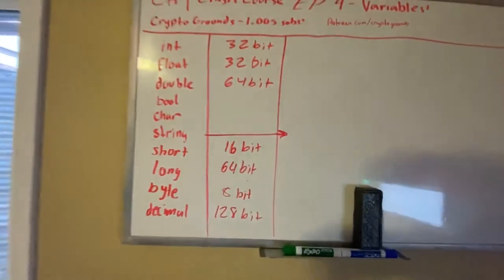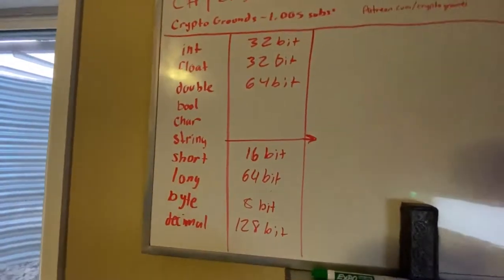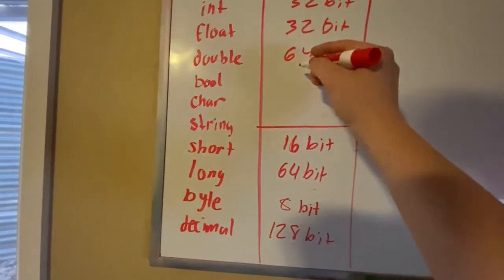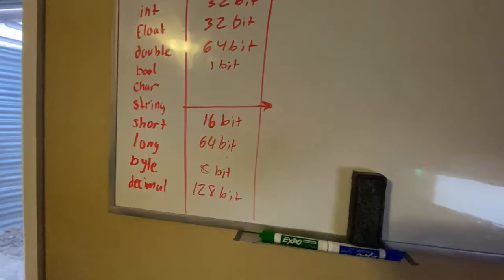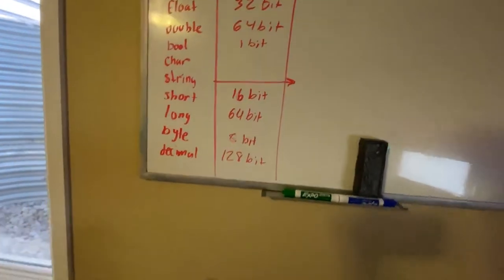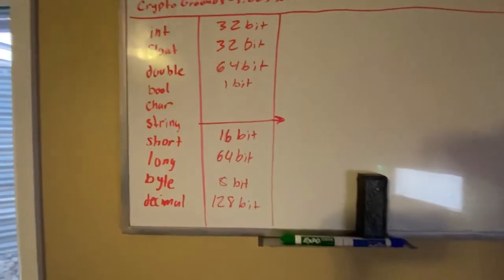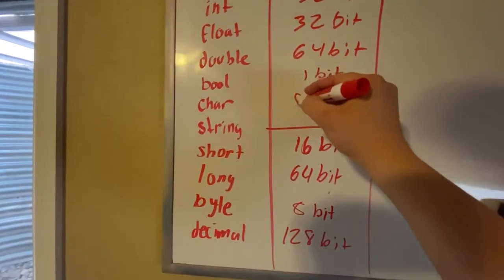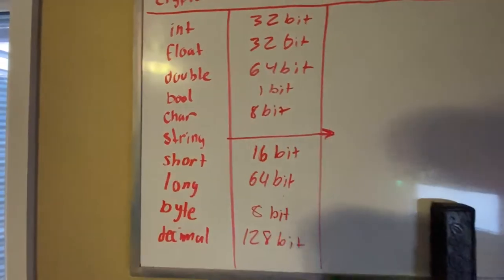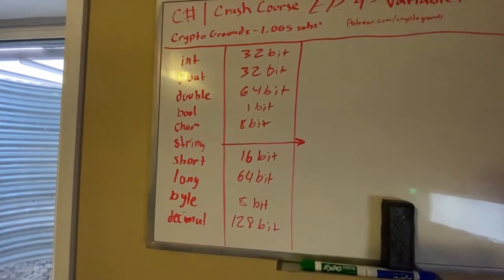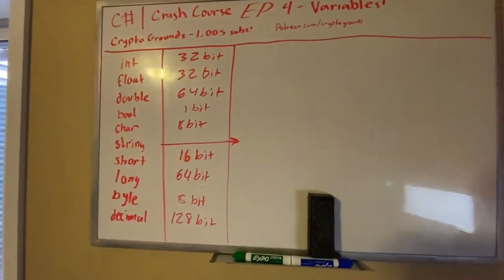We have two more to go: bool and char and string. Bool is simply one bit, because it's zero or one, just one bit. Zero being false, one being true. And char is 8-bit, which is basically just an ASCII character. String on the other hand is a little special. String is actually a class.